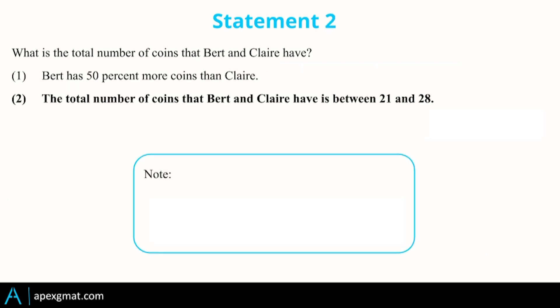So number one is insufficient. Number two doesn't provide us any relationship between Bert and Claire's coins but gives us a restrictive range. So while two is also going to be insufficient because we have no idea whether it's 22 or 27 or anything in between, we now might be able to combine it with number one in order to figure this out.